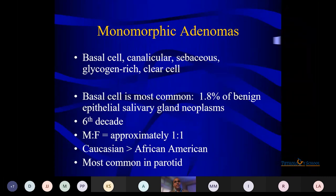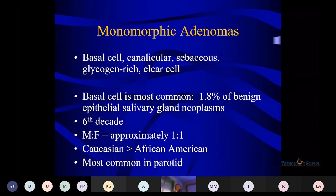Monomorphic adenoma — I use this term because pleomorphic adenoma has both epithelial and myoepithelial features. In monomorphic adenomas, such as basal cell adenoma, canalicular adenoma, sebaceous adenoma, glycogen-rich adenoma, and clear cell adenomas, there is only one epithelial component in origin.